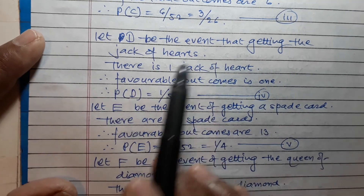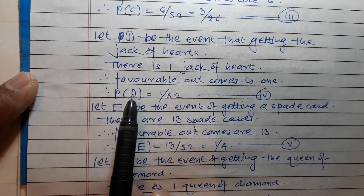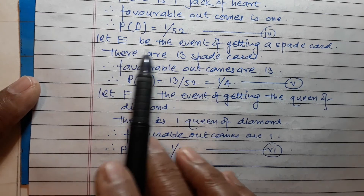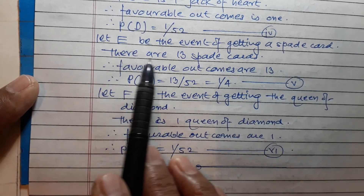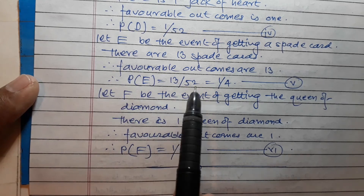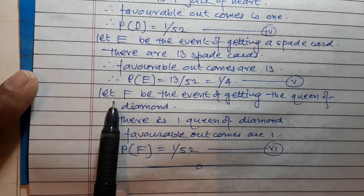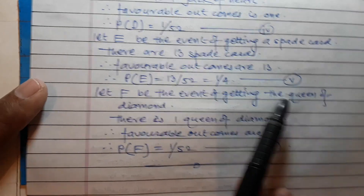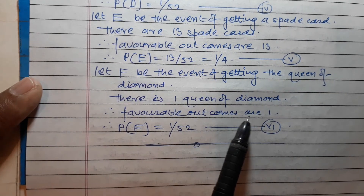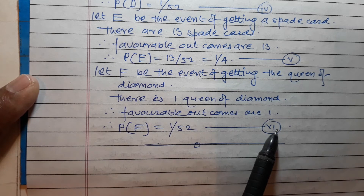Let D be the event of getting the jack of hearts. There is one jack of hearts, so favorable outcomes is one, and therefore P(D) is equal to 1 upon 52. Answer number four. Let E be the event of getting a spade card. There are 13 spade cards, favorable outcomes are 13, and hence P(E) is equal to 13 upon 52, that is 1 upon 4. Answer number five. Let F be the event of getting the queen of diamond. There is one queen of diamond, favorable outcomes are one, and hence P(F) is equal to 1 upon 52. Answer number six.